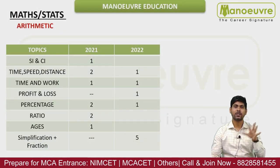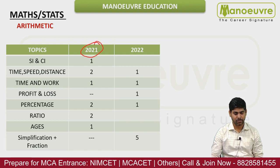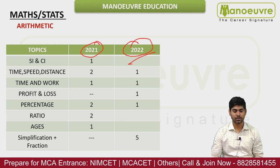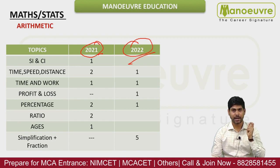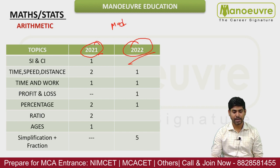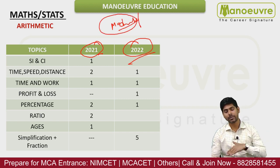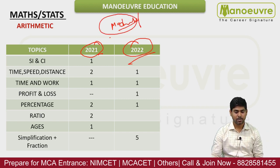Let's discuss in detail about the Arithmetic topic. Let's look at the stats of MCACET 2021 and the last year's exam, 2022 — which topics, how many questions come from each. The level of questions will be moderate — not too easy, not too difficult. Moderate level questions you can expect from Arithmetic.